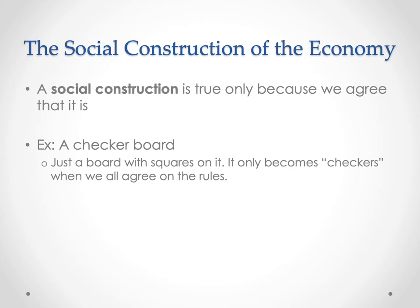An example of a social construction would be a checkerboard. A checkerboard is just a board with squares on it, and it only becomes checkers when we all agree upon the rules. A checkerboard can also be a chessboard, which has different pieces and different rules — it becomes a chessboard when we all agree upon the rules of what different pieces can do. If we don't agree on the rules, we're no longer playing checkers or chess.